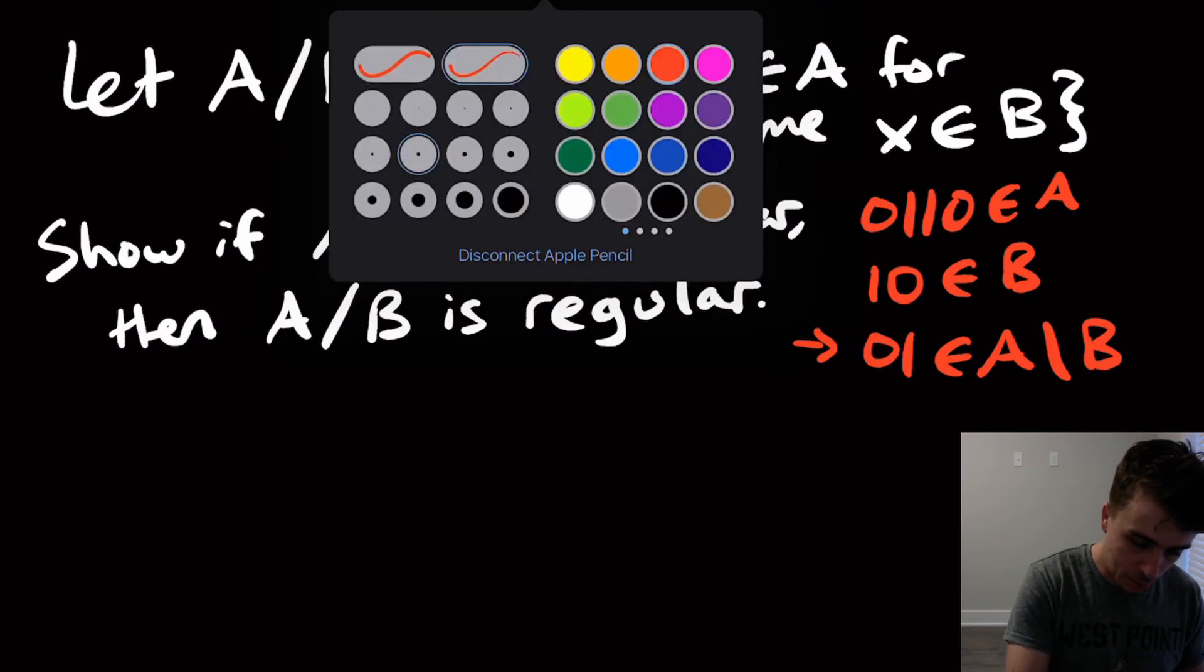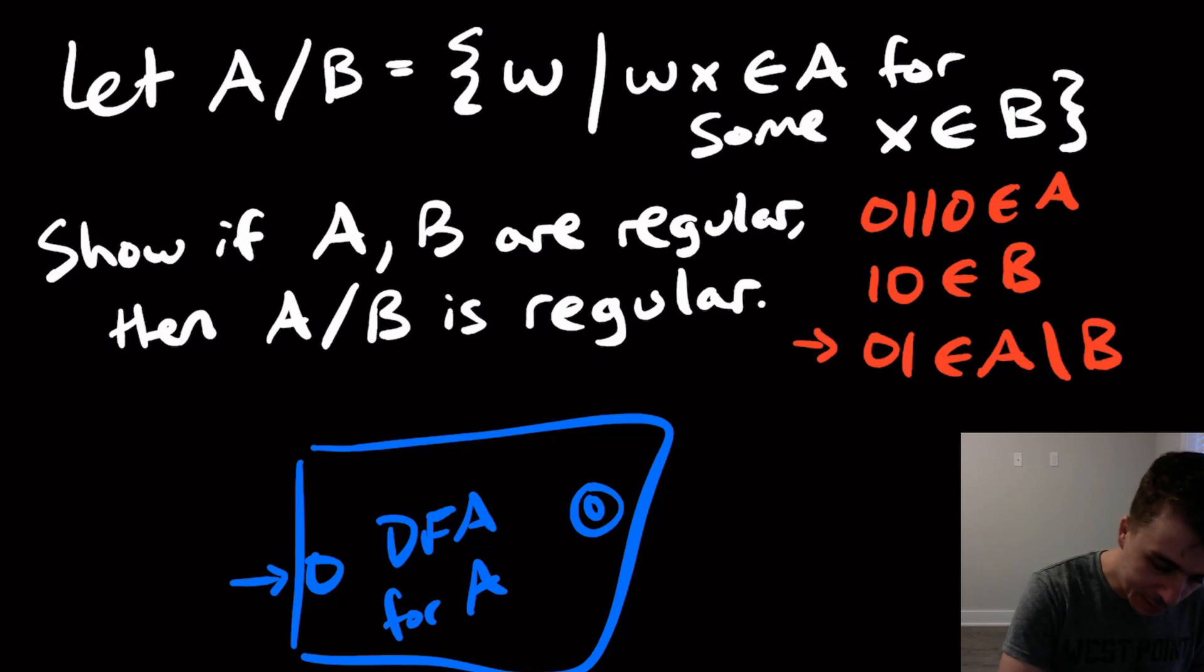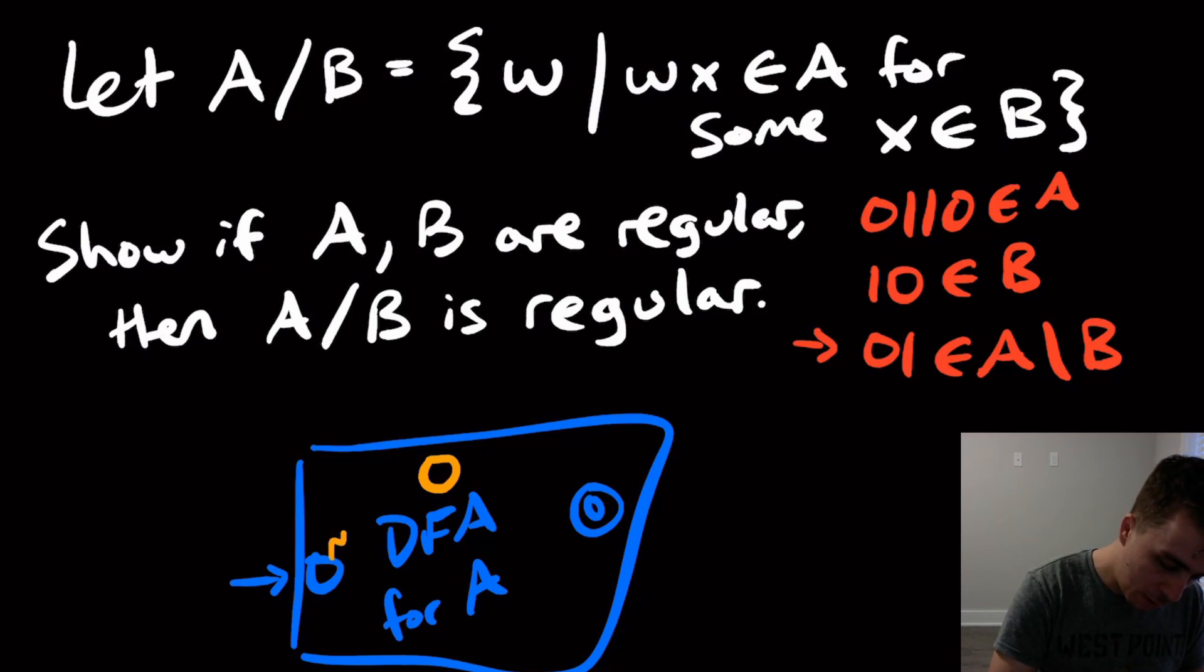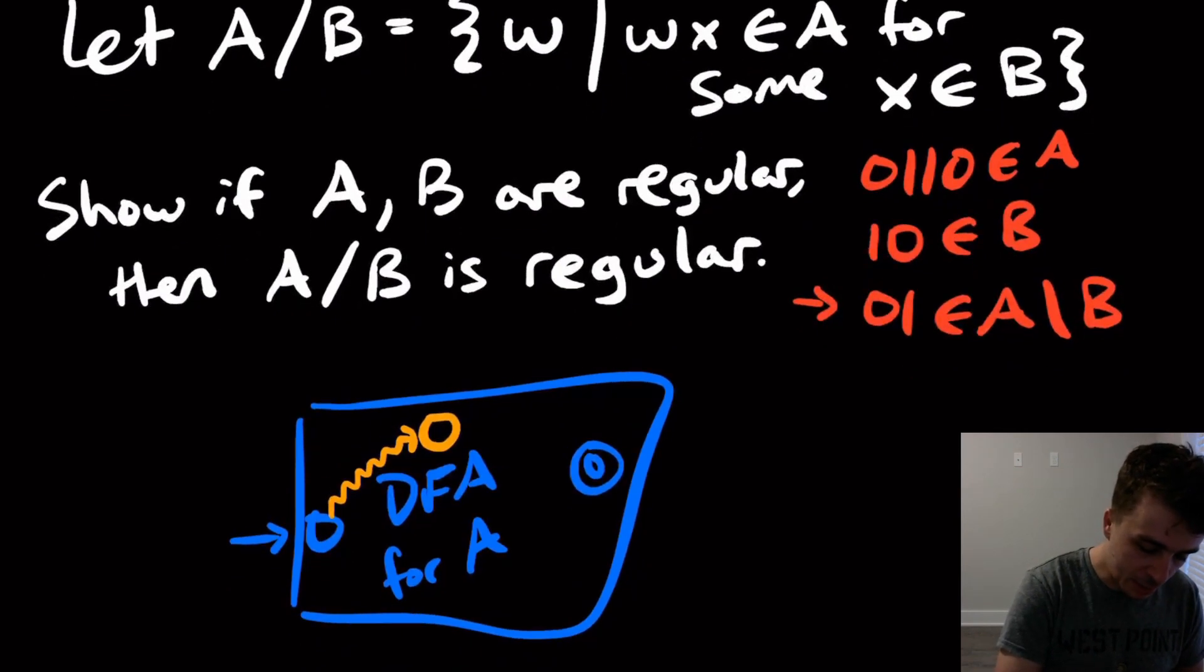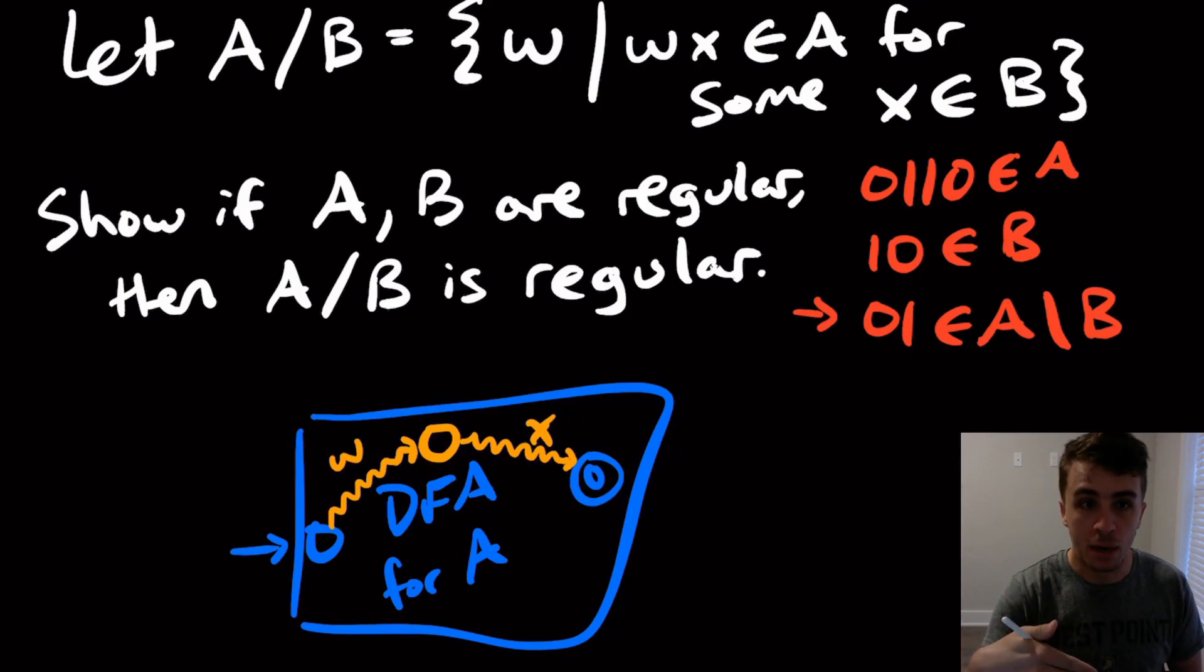So let's just imagine a DFA for A. So this thing I'm going to imagine is a DFA for A. And of course it has a start state, and let's say that it has a final state. Then what this means is that suppose that we had some state right here in the middle, where if we read from the start state to it, then that means that let's just say we read a string of the form w, and then from that state eventually to a final state, we read something, let's call it x. Well, we need to land in a final state because we're considering strings that are in A.